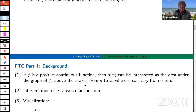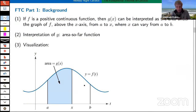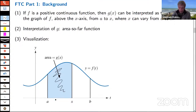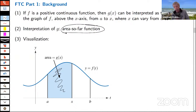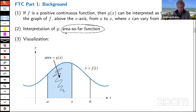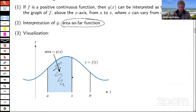One way I explain this simply: if x is fixed — if we put in a specific number — we get a specific number back. But as x varies, the definite integral also varies. If f happens to be a positive continuous function, then g of x can be interpreted as the area under the graph above the x-axis from a to x. I think of g as what I call an 'area so far' function. I start at a, and as I move left to right, g is accumulating area.